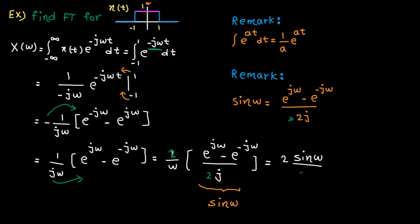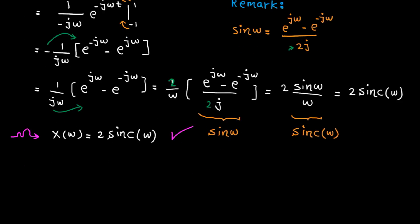Sine omega divided by omega is a famous function in signal processing. And we usually refer to this function as sinc of omega. So here is the final answer. Done.